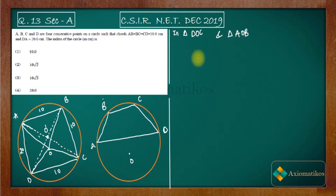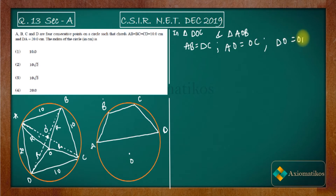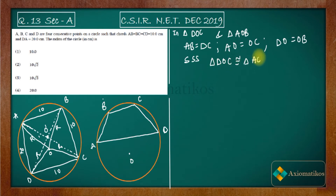In triangles AOB and DOC: since O is the center, OA = OB = OC = OD = r (radius). Also, AB equals DC (both equal 10). So by SSS congruency, triangle DOC is congruent to triangle AOB.